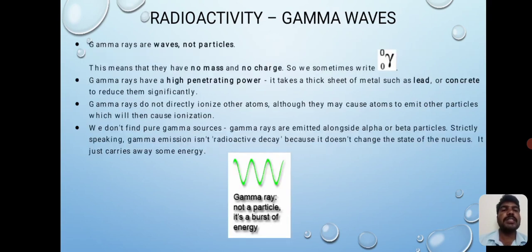Gamma rays are waves, not particles. This means that they have no mass and no charge. Gamma rays have a high penetrating power, so it takes a thick sheet of metal such as lead or concrete to reduce them significantly.